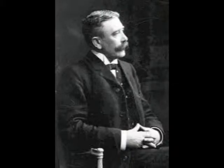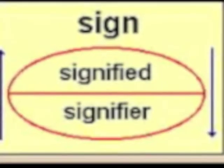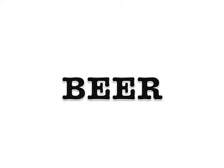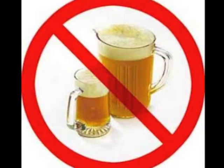Saussure stated that there was no basic or necessary relationship between the signifier — usually a word or symbol that carries the meaning — and the signified, which is the actual meaning. For example, the word 'beer' is not actually beer. However, the meaning of beer could be conveyed by any random combination of letters, but in English the meaning itself is carried out by the letters B, E, E, R.